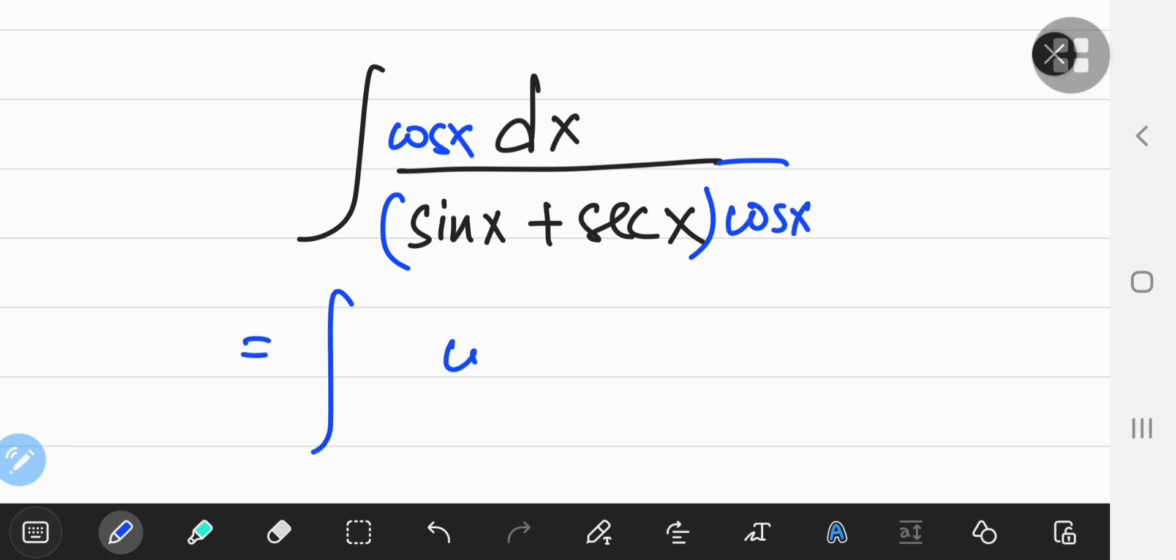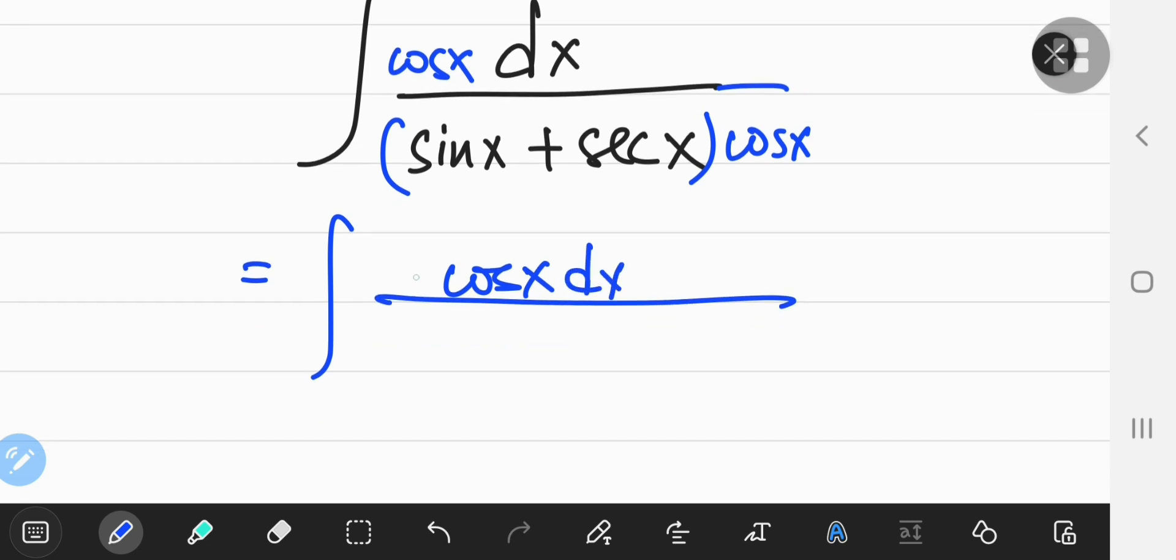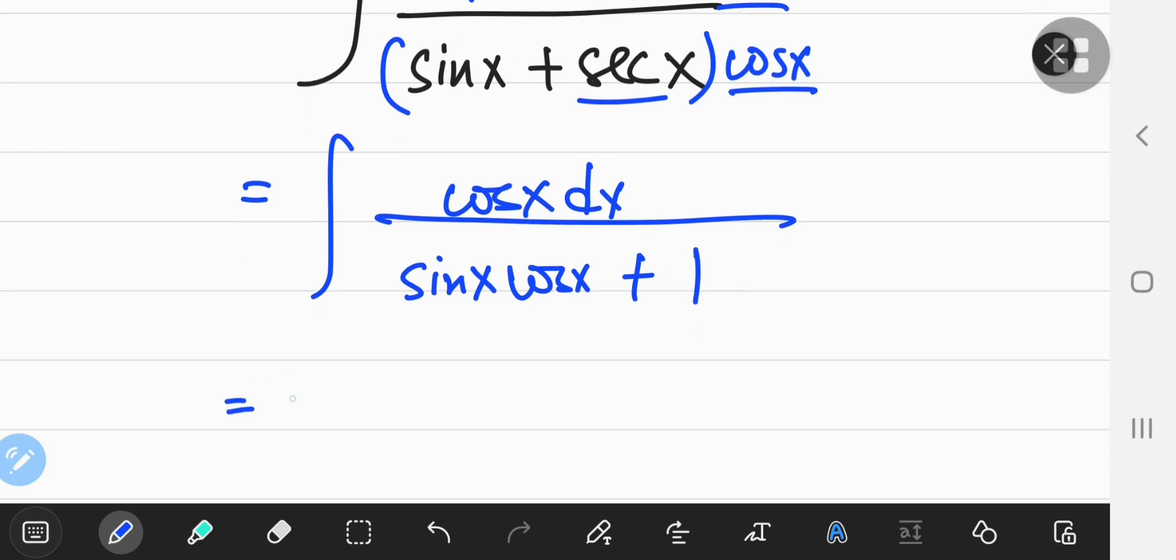So that's going to give me cos x dx up here, and down here I'm going to have sin x times cos x, and since secant and cosine are multiplicative inverses of each other, I'm going to get a 1 down here.